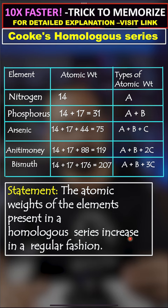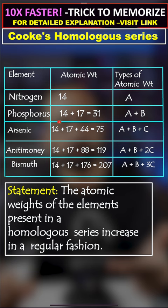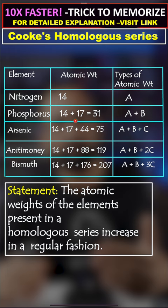For example, nitrogen has an atomic weight of 14, let's call it A. Then phosphorus will be 14 plus 17, which equals 31 — where 17 is B — so it becomes A plus B. Arsenic is 14 plus 17 plus 44, which equals 75, expressed as A plus B plus C.